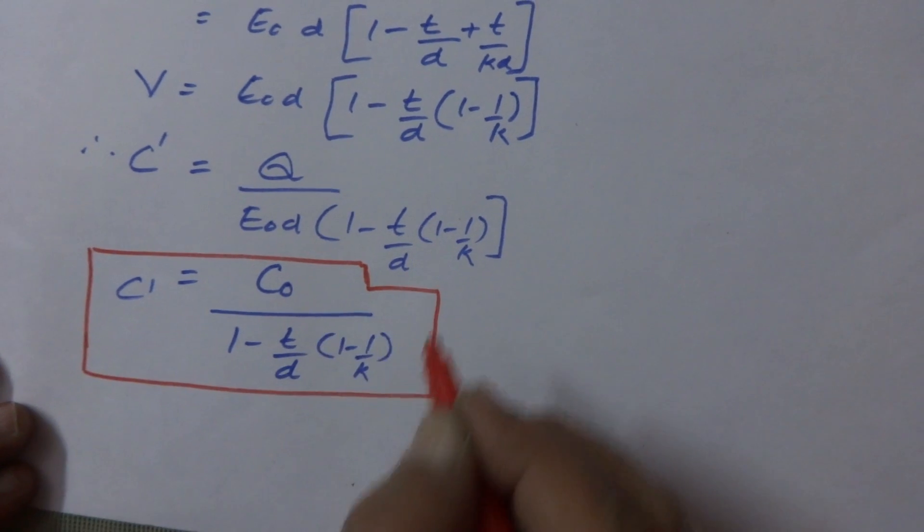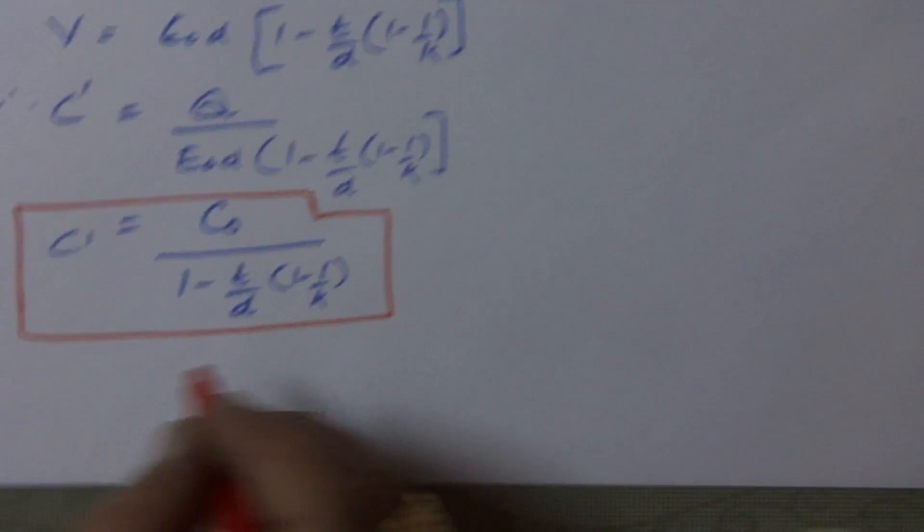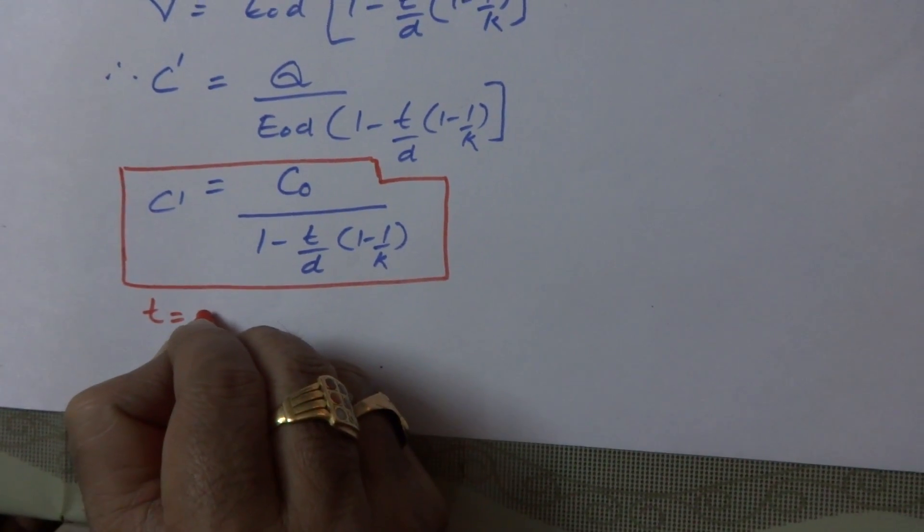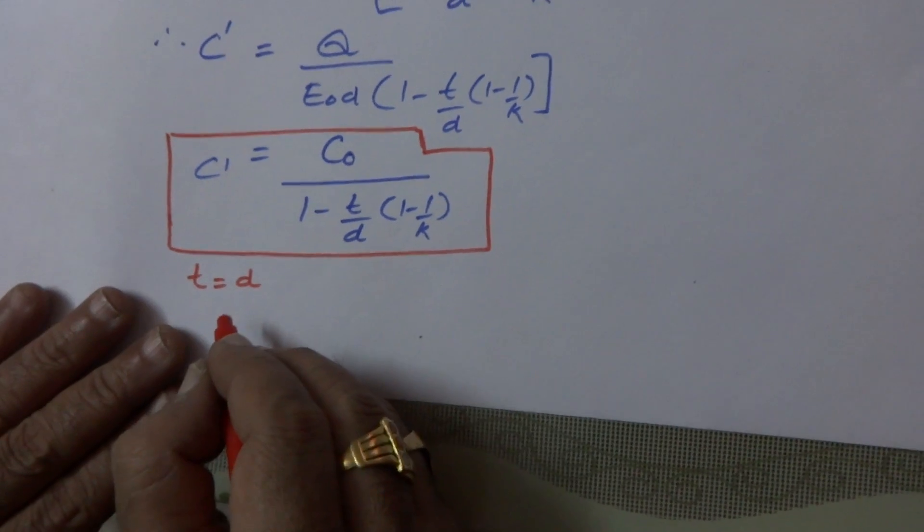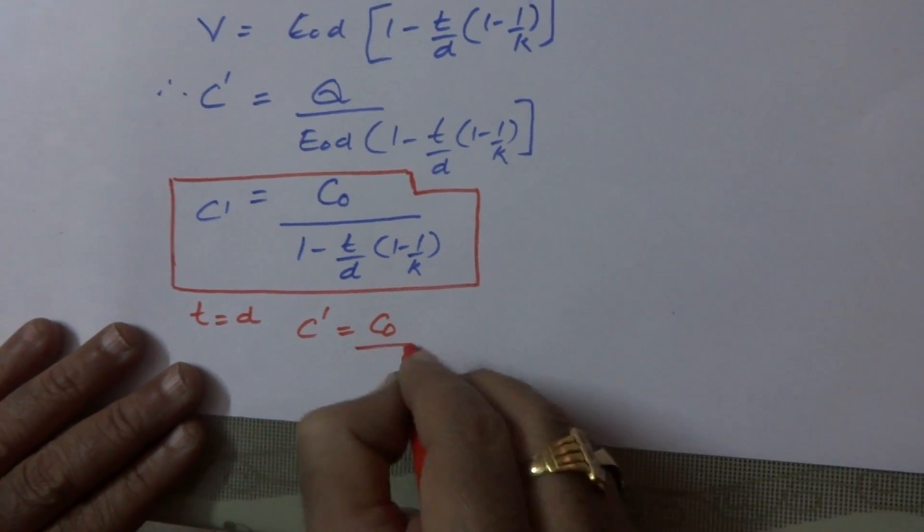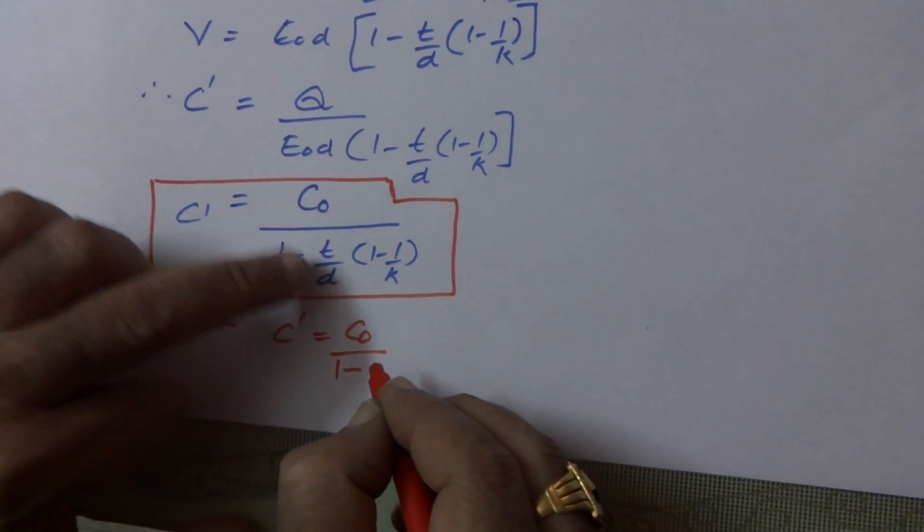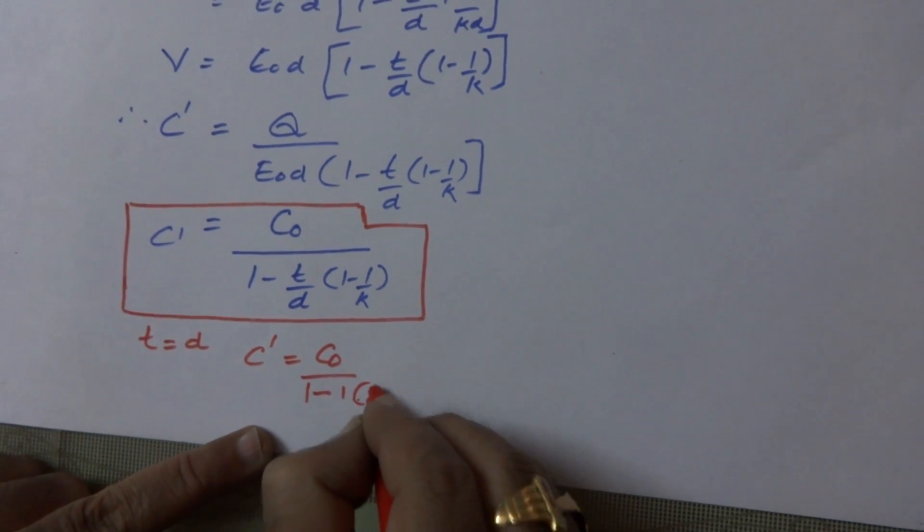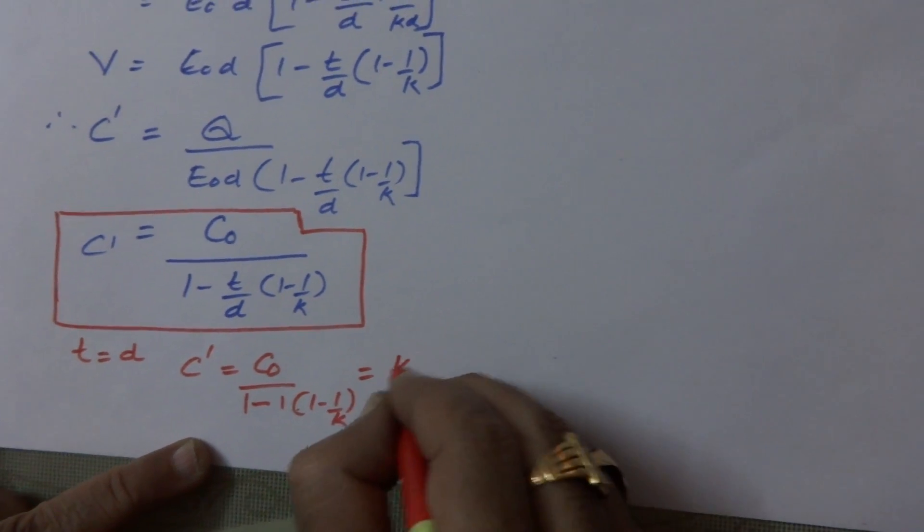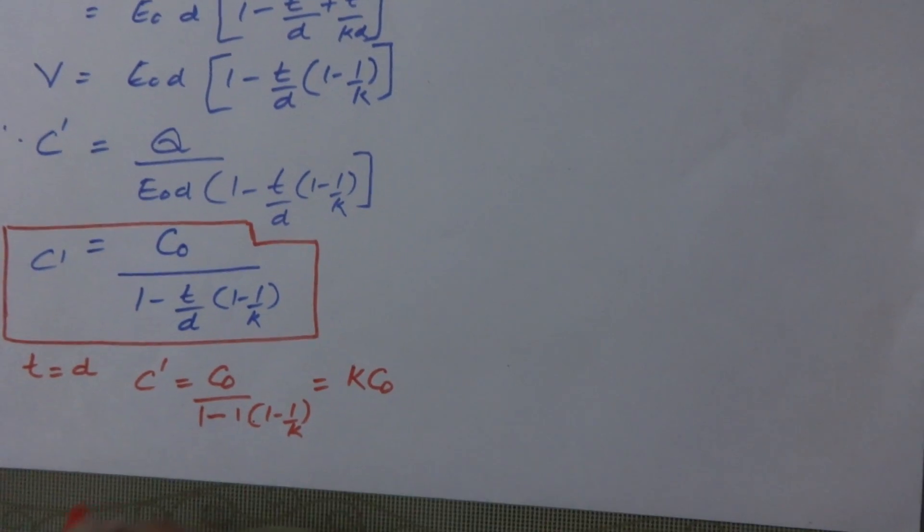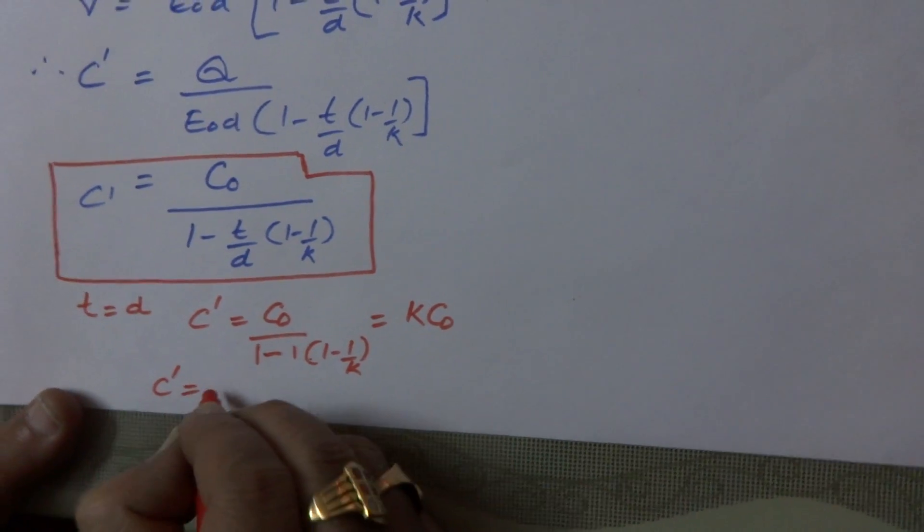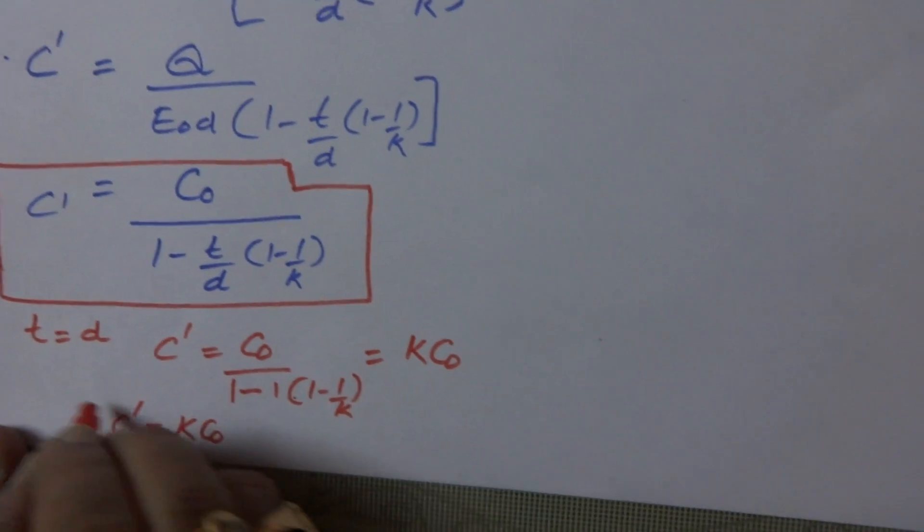We can discuss special cases. Suppose, if the dielectric slab is fully occupying the space between the two plates, that means t must be equal to d. When t is equal to d, then C dash is equal to C0 by... this becomes 1, t by d. When t is equal to d, this becomes 1, and then 1 minus 1 by k. This 1 and this 1 will be cancelled. Finally, it becomes k times C0. That means, if the dielectric slab is fully occupying the space, then the new capacitance will be increased by k times.